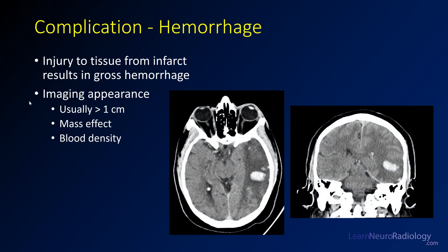Hemorrhage is related to the injury of tissue from an infarct. The vessels die, the tissue is dying. Because of that, the vessels can no longer contain the blood flow, and you can get rupture of those, and you can get gross hemorrhage into the affected area. Here you see an example — this is a left MCA infarct. We have this large region of hypodensity in the left MCA territory, and centrally within that, we have some mass-like areas of hyperdensity, hyperattenuation, and you see it again on the coronal. That's an area of hemorrhage.